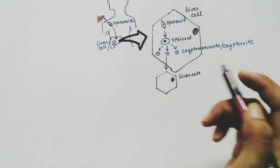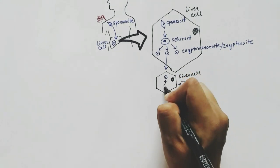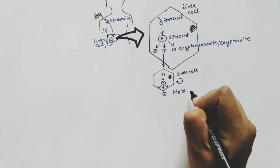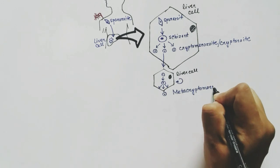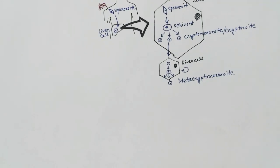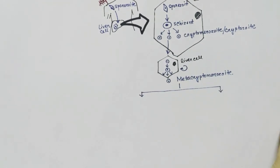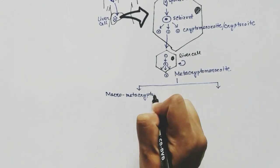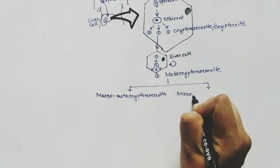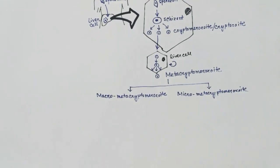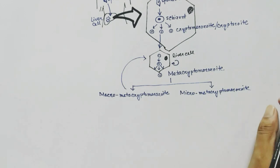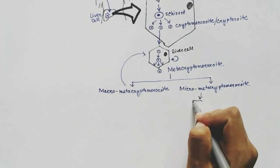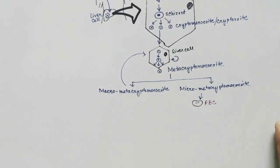After leaving one liver cell, the cryptomerozoite enters another liver cell and goes through the same process again. The merozoites formed the second time are called metacryptomerozoites. These metacryptomerozoites can be of two types: macro metacryptomerozoites and micro metacryptomerozoites. The macro metacryptomerozoites attack other liver cells, while the micro metacryptomerozoites go to the RBC — the red blood cell — and enter it.